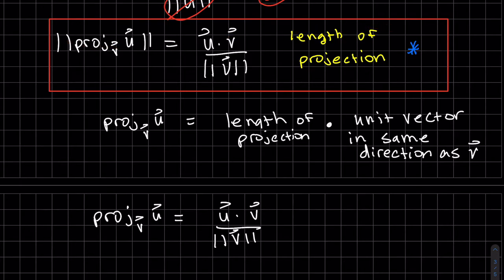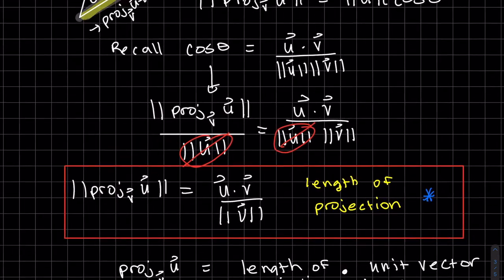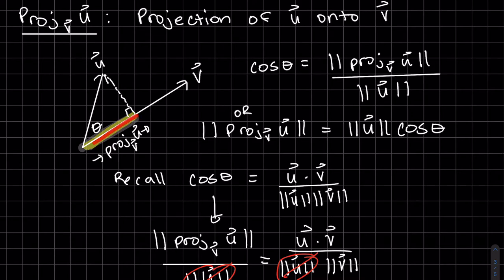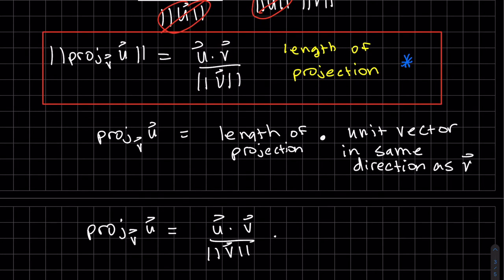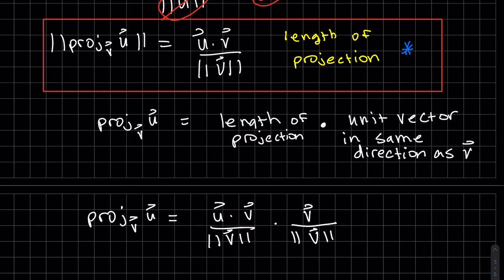And then a unit vector in the same direction as V, well, let's look at our picture. So we can see here, the projection lies on V. So we can take V and make it a unit vector. How do we do that? We normalize it. So we take V and we divide it by the magnitude of V. And so here's our equation.